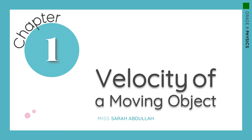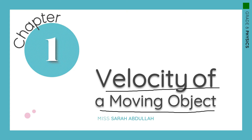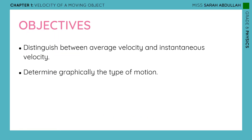Hello, grade 8. How's everyone doing? Today we're going to continue with our lesson, chapter 1, which is Velocity of a Moving Object. This is the second part of the chapter and the final part. In this lecture, you'll be able to distinguish between average velocity and instantaneous velocity, and also determine graphically the type of motion.